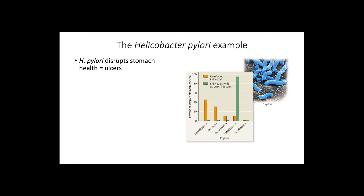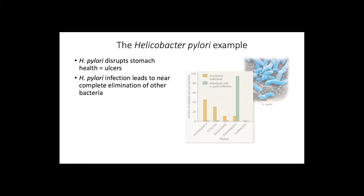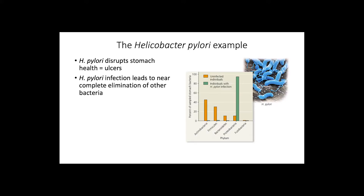One key bacterial species associated with the human digestive system is Helicobacter pylori, a microorganism shown to disrupt stomach health by forming ulcers. Infection by Helicobacter pylori also leads to the elimination of other microorganisms, as shown in the graph, significantly altering the gut microbiota. These changes in the microbiome often lead to the onset of different diseases, such as obesity, diabetes, and cardiovascular disease.